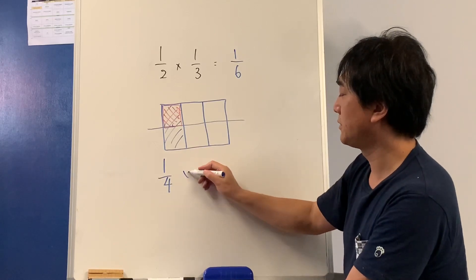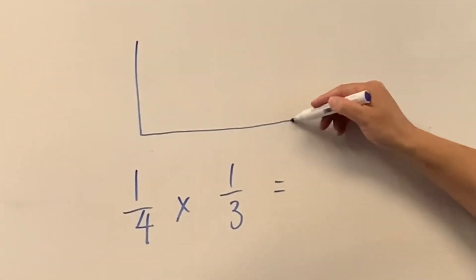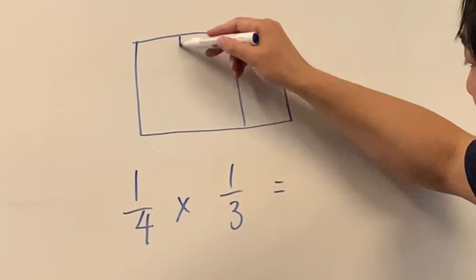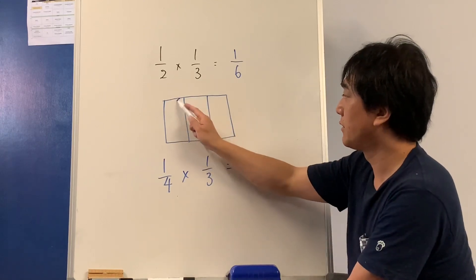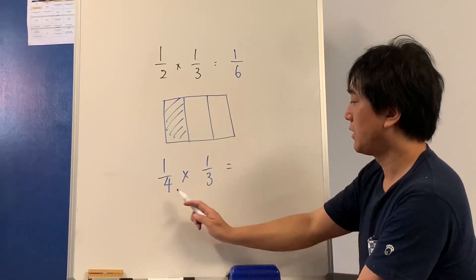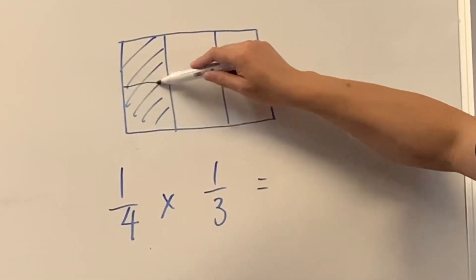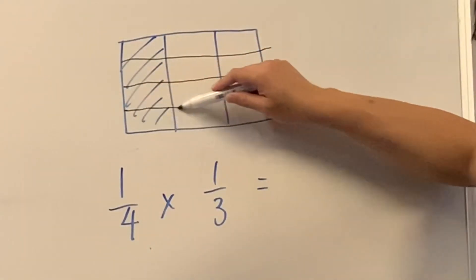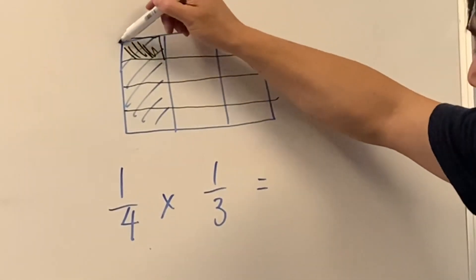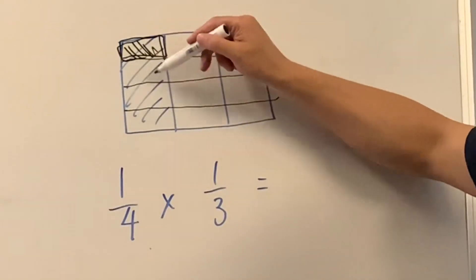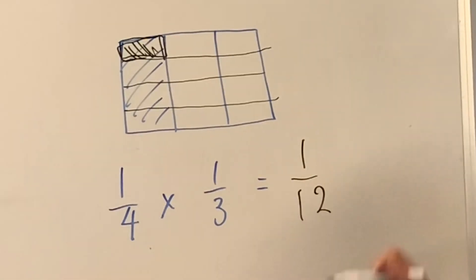How about one-quarter times one-third? I need one-quarter of a third. I'm going to cut it into four equal pieces — one-quarter of one-third is only this much. I have one-quarter of one-third. That is one-twelfth.